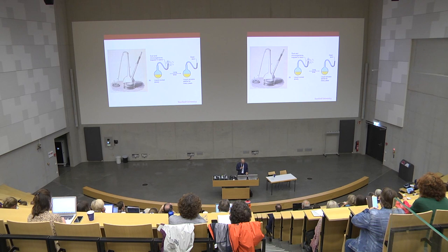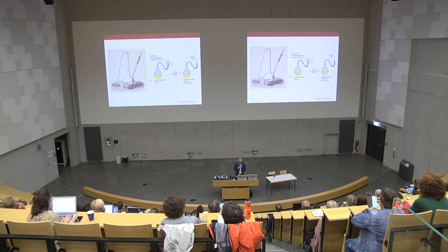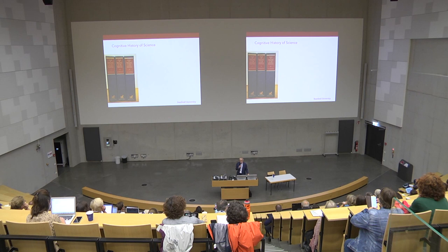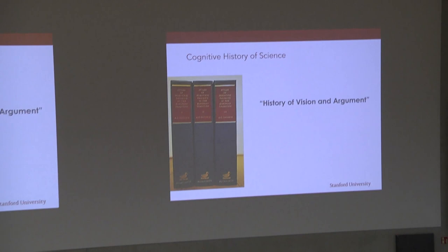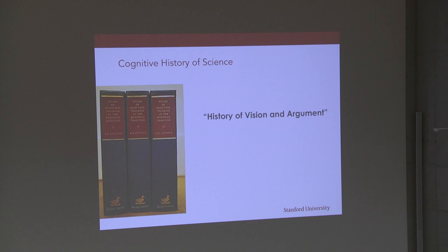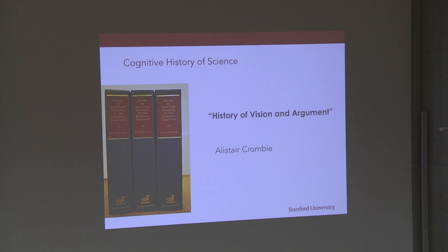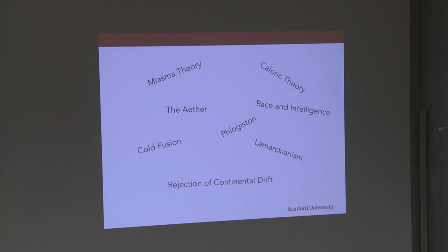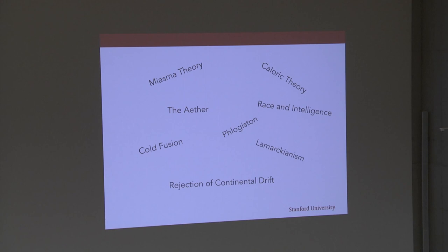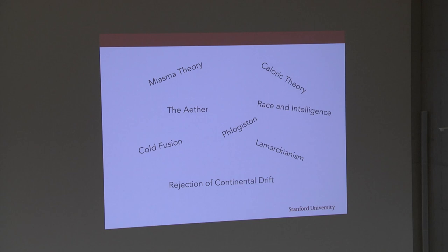As Alastair Crombie argues in his three-volume study of styles of scientific thinking in the Western tradition, the history of science is a history of vision and argument — these ideas have all had to be argued for. But also, people forget that science is a history of mistakes: phlogiston, spontaneous generation, the ether, cold fusion, Lamarckianism, caloric theory are some of the more well-known ones. It is up to scientists to test their ideas and make mistakes — and this is essentially how science proceeds.